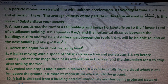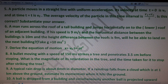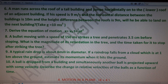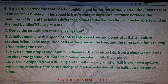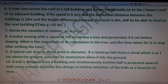Seventh question: derive the second equation of motion — s = ut + ½at² (also written as x = v₀t + ½at²). Eighth problem: a bullet moving at 150 m/s strikes a tree and penetrates 3.5 cm before stopping. Find the magnitude of its retardation and the time taken to stop after striking the tree.